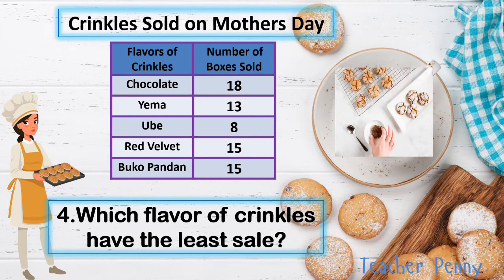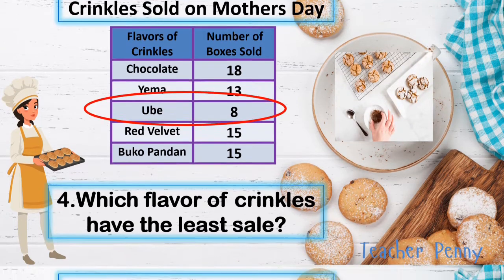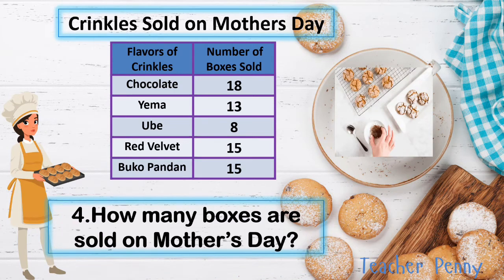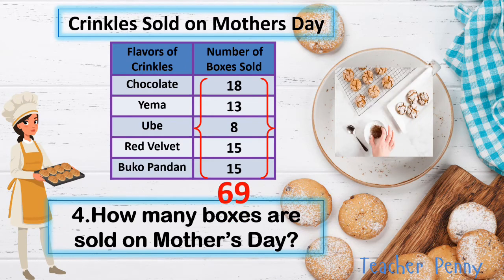Which flavor of crinkles has the least sale? The answer is ube. How many boxes were sold on Mother's Day in total? All you have to do is add these numbers: 18 plus 13 plus 8 plus 15 plus 15, which equals 69. So 69 boxes were sold on Mother's Day.